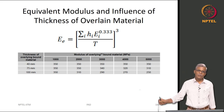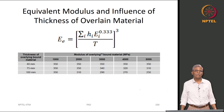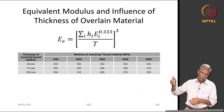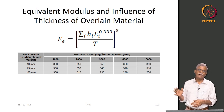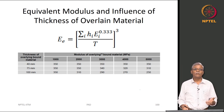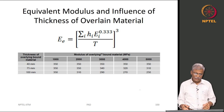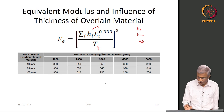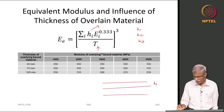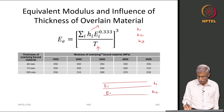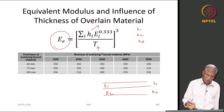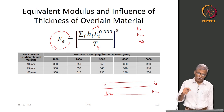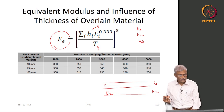Similar to what is done in IRC 37 for granular materials, what is called the equivalent modulus accounts for the influence of thickness of overland material. For different overland materials with individual layer thicknesses H1, H2 and moduli E1, E2, you can compute the equivalent modulus, which will then be used in the design calculation.